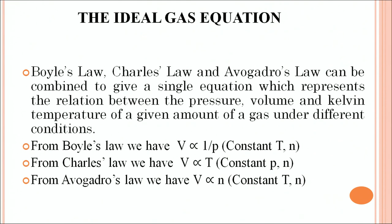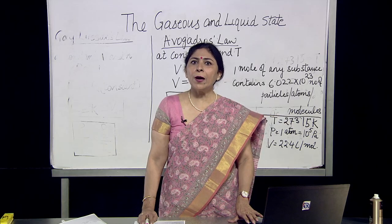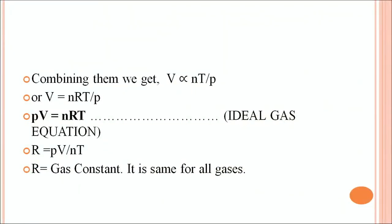Boyle's law, Charles' law, and Avogadro's law can be combined to give a single equation representing the relation between pressure, volume, and Kelvin temperature of a given amount of gas. Boyle's law: V ∝ 1/P; Charles' law: V ∝ T; Avogadro's law: V ∝ n. Combining all three: V ∝ nT/P, or V = nRT/P, where R is the universal gas constant. This gives the ideal gas equation: PV = nRT.